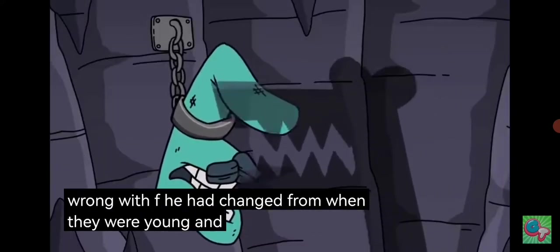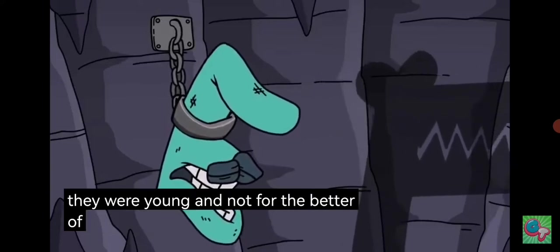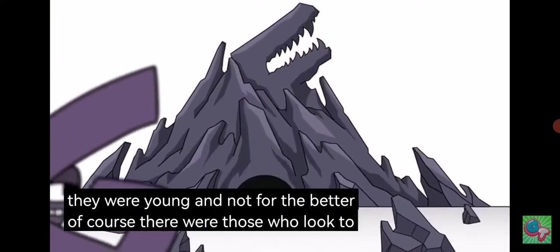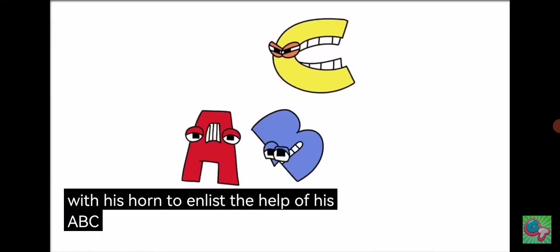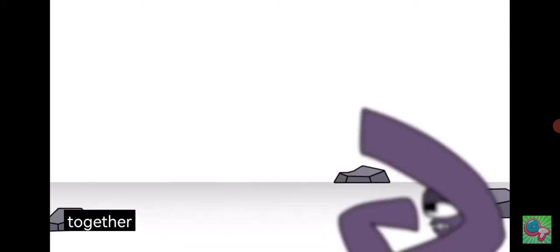Of course, there were those who looked to end his reign of terror. G called out with his horn to enlist the help of his ABC allies. Together they formed a cab and swore to track down F to the ends of the earth.